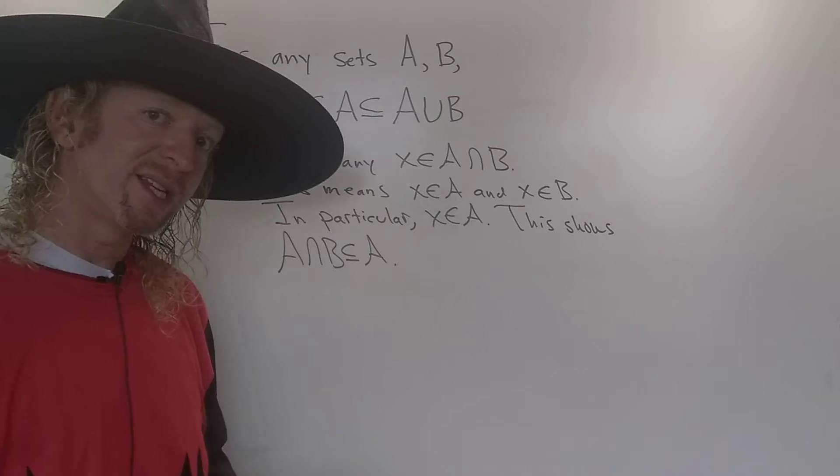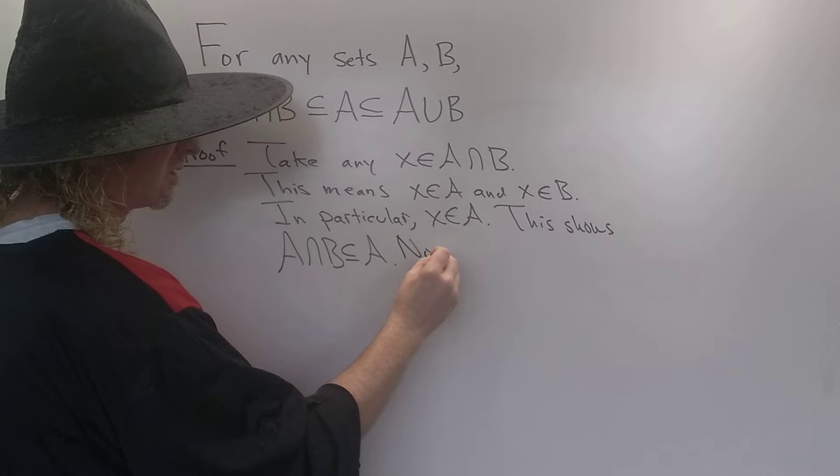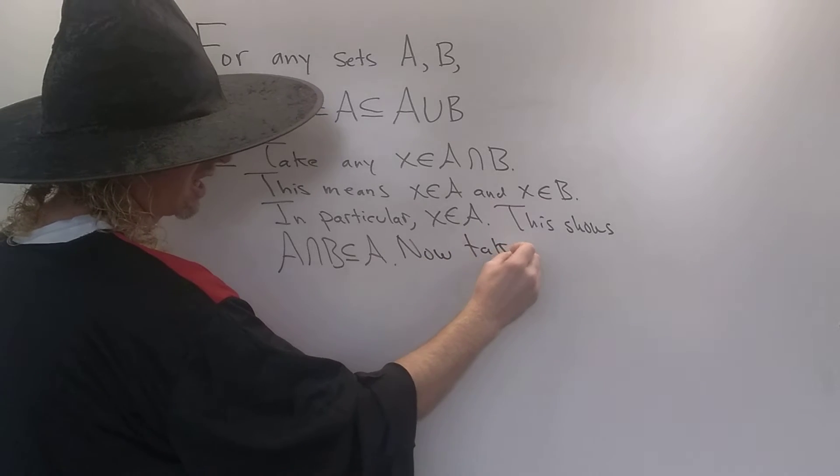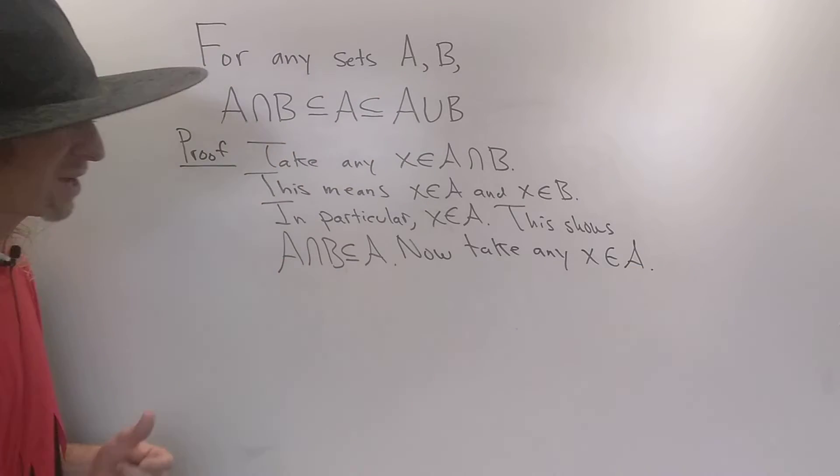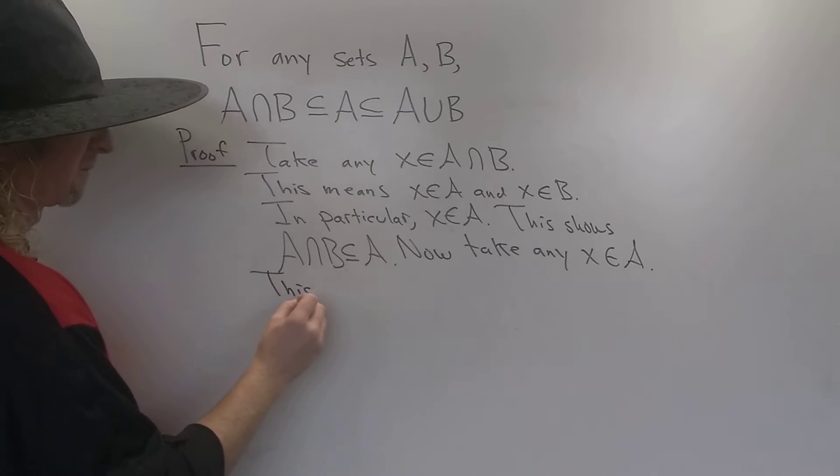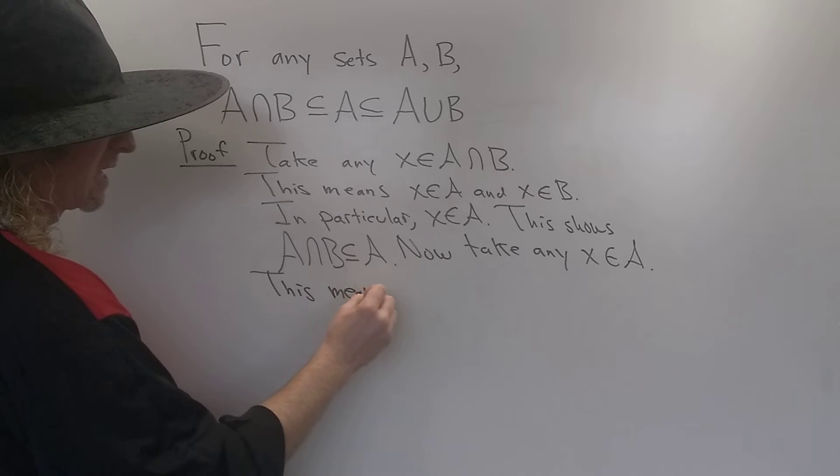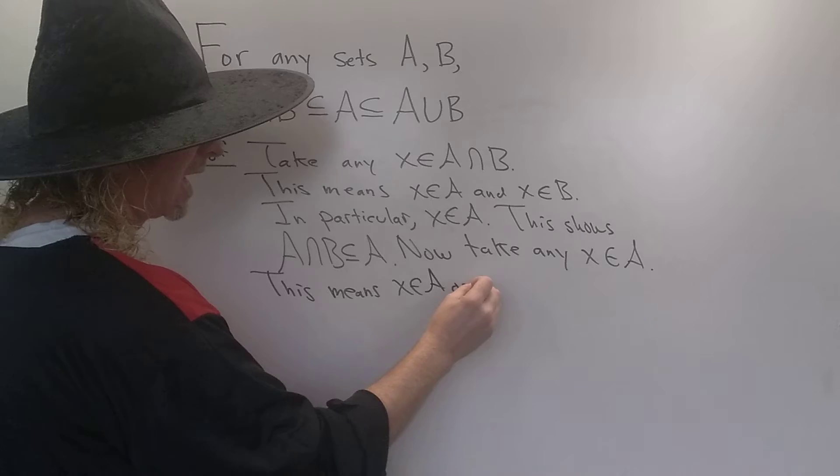Now we have to show that A is contained in the union, so we'll do it again. So now take any X in A. And now we have to show it's in the union. So here's the trick. This might not make sense, but I'll explain it. This means X is in A, or X is in B.